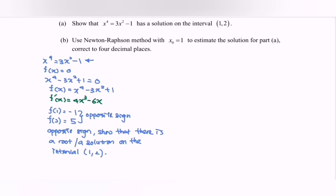Next, part b. Use the Newton-Raphson method with the initial value x₀ equal to 1 to estimate the solution for part a, correct to four decimal places.